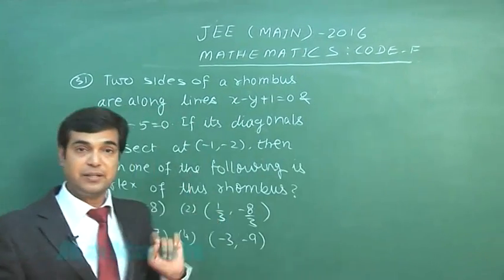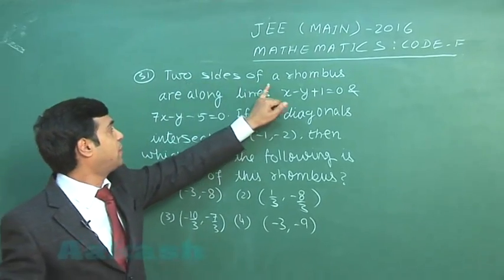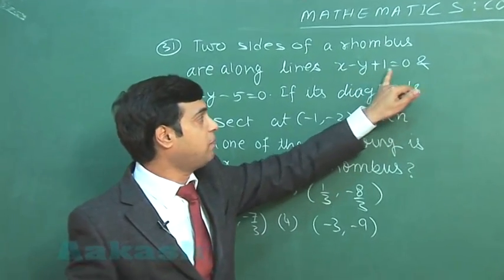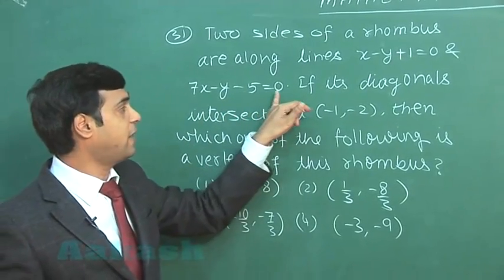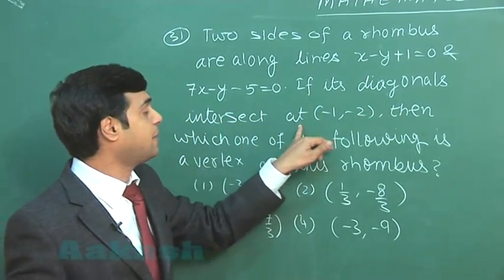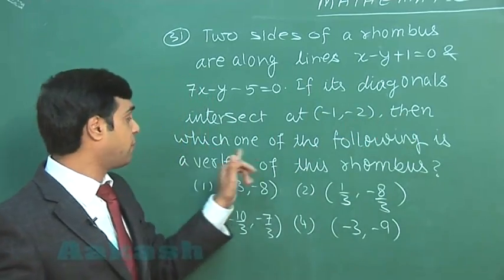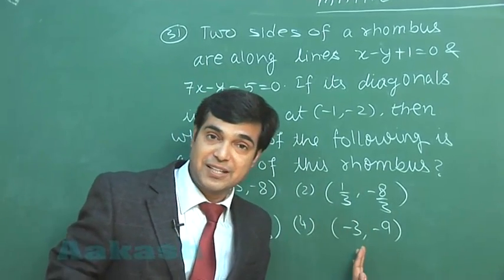Starting with question number 31. Two sides of a rhombus are along lines x minus y plus 1 equals 0 and 7x minus y minus 5 equals 0. If its diagonals intersect at (-1, -2), then which one of the following is a vertex of this rhombus? Four options are given for the same.